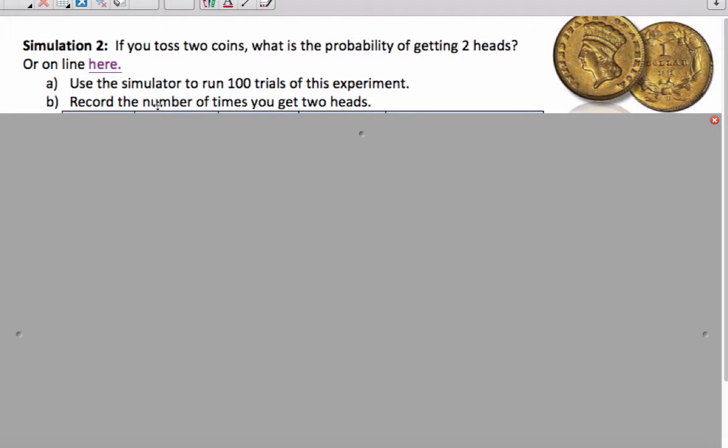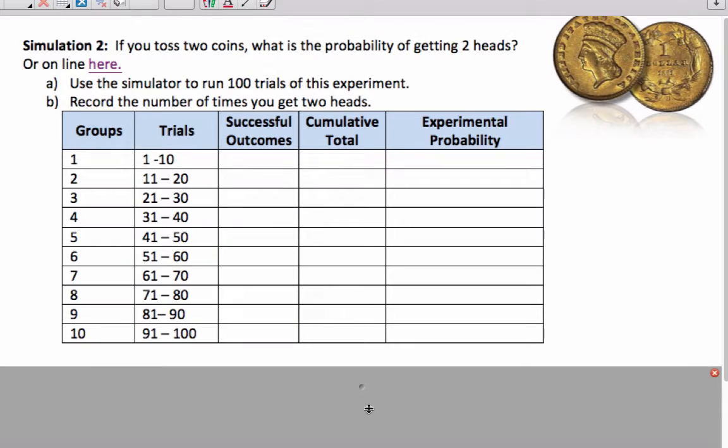Okay, so we're going to do another simulation for experimental probability. If you toss two coins, we're looking at what's the probability of getting two heads. And you'll have to run the simulator, so click on the link there. And we're going to simulate 100 trials, and we're going to fill in this table. I'm going to start you off, and you'll have to finish it off yourself.